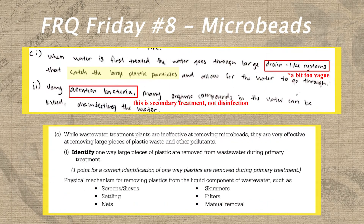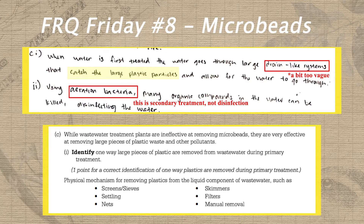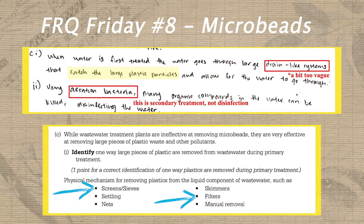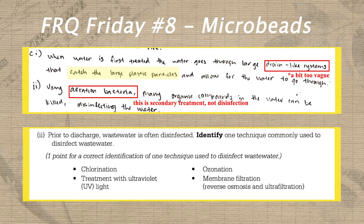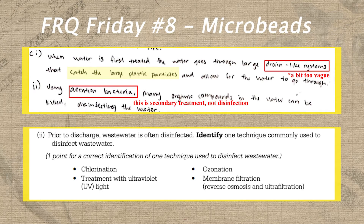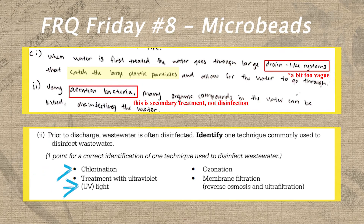In part C, Wilson unfortunately misses the identified points in parts one and two. In part one, describing a 'drain-like system' instead of a filter or a screen is just a little bit too far off the mark. And in part two, he mixes up secondary treatment and disinfectant. Remember that microbes are added for the aerobic decomposition that occurs in secondary treatment, but then those microbes and any remaining pathogens are killed with disinfectant such as chlorine or UV light before the release of the treated wastewater.